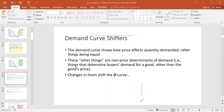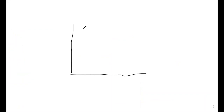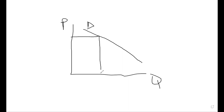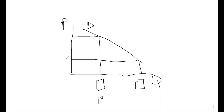A demand curve looks like this — negatively sloped. We label it D, with price on the vertical axis and quantity demanded on the horizontal axis. The higher the price, the lower the quantity; the lower the price, the higher the quantity. Any point further right on the horizontal axis represents a larger quantity.